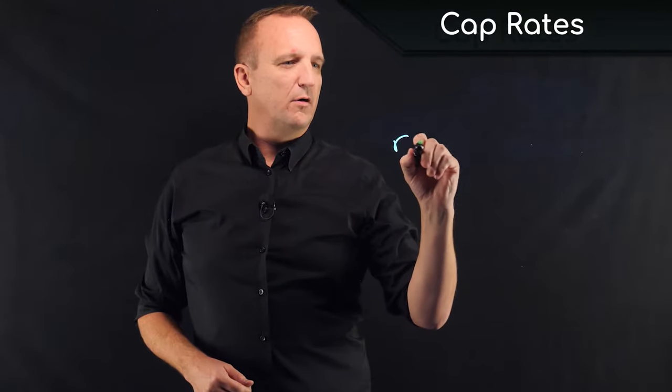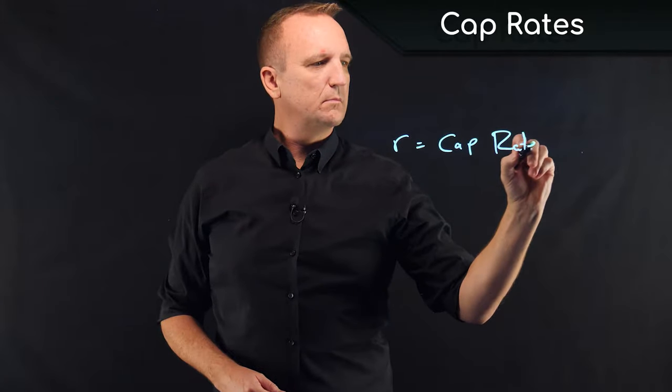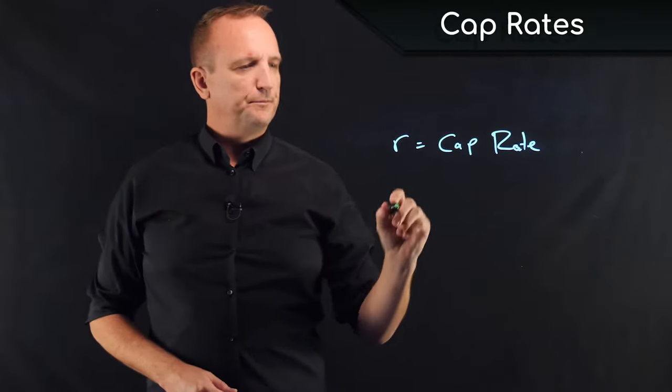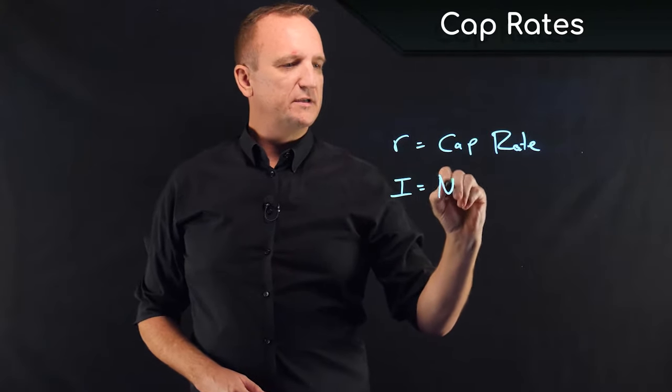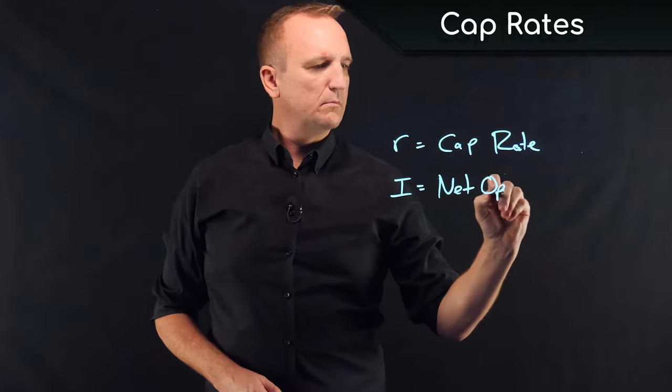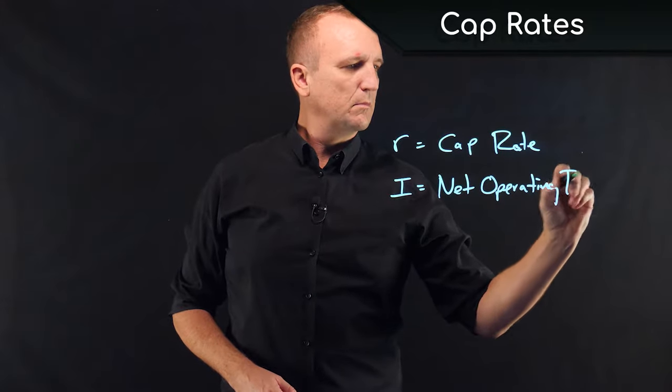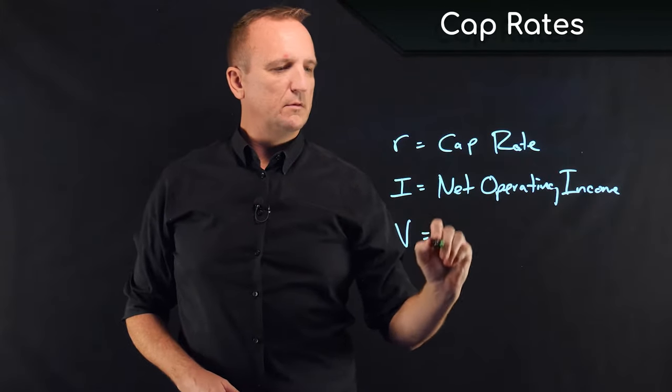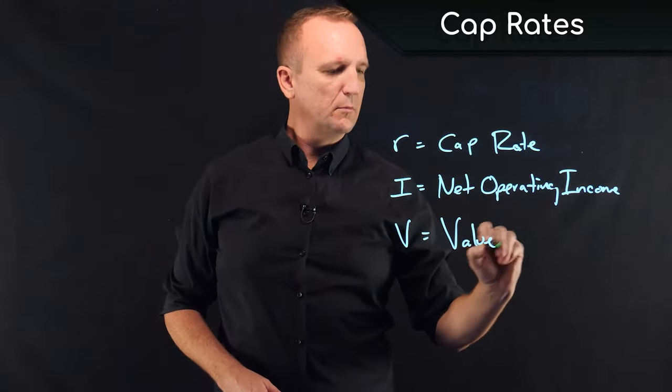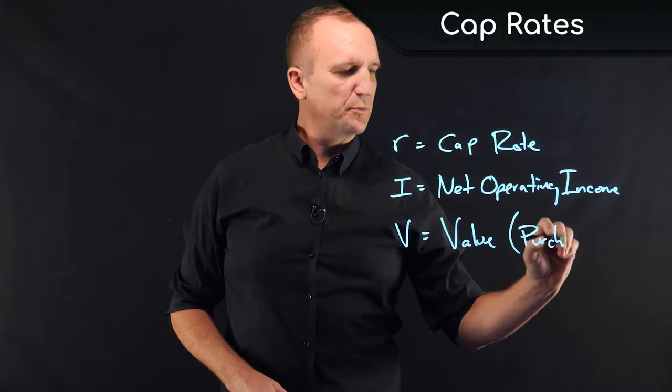First, we have R, which is the cap rate. We have I, which is the net operating income. And we have V, which is the value, or in the case of an acquisition, the purchase price.